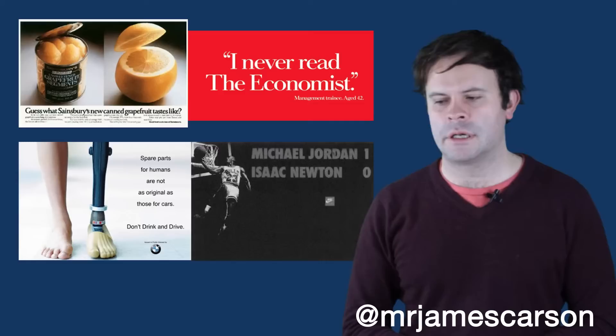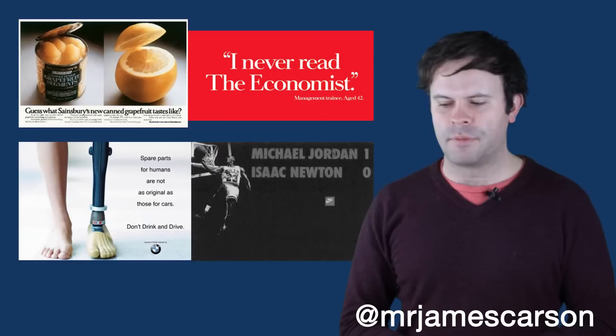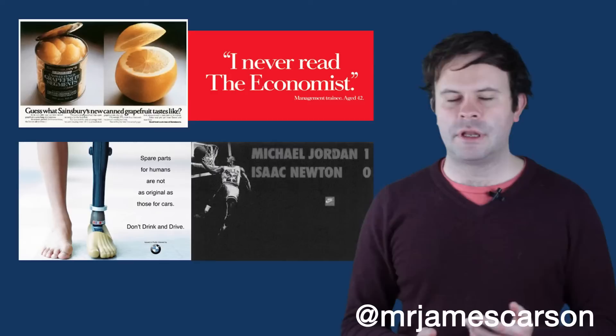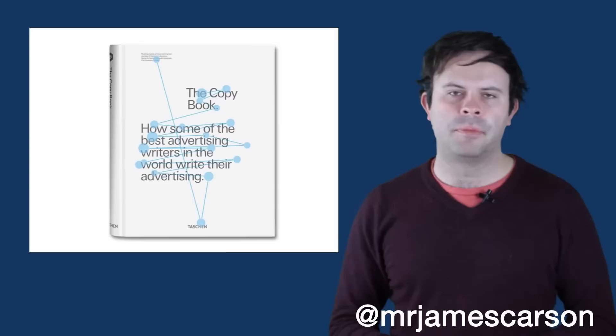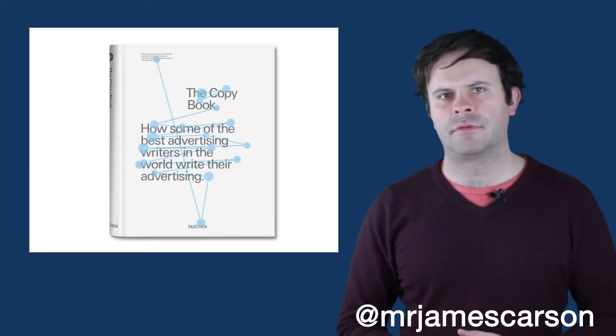Here are four great ideas. I particularly like the one from The Economist, which often has witty headlines — 'I've never read The Economist, management trainee, age 42.' And this one from Nike: 'Michael Jordan 1, Isaac Newton 0.' You wouldn't even need a powerful visual to explain that idea — that Nike shoes help you beat gravity. I also highly recommend reading The Copy Book by D&AD — every page has a great idea you could take inspiration from for your own content.